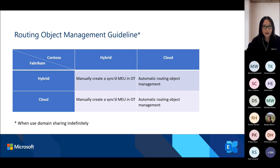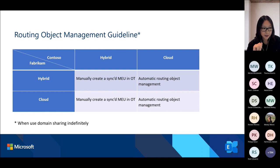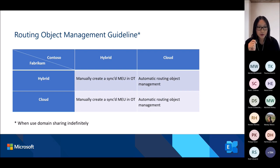Routing objects forward mail from Fabrikam to Contoso. There are two ways to create them: manually, or let the system automatically create them for you. However, automatic routing object creation can only be used in a cloud-only environment. If Contoso is in a cloud-only environment, you can use that functionality — it creates the routing object for you and checks address uniqueness before a shared domain email address is assigned. If Contoso is in a hybrid environment, you have to manually create routing objects in Fabrikam and ensure address uniqueness yourself.